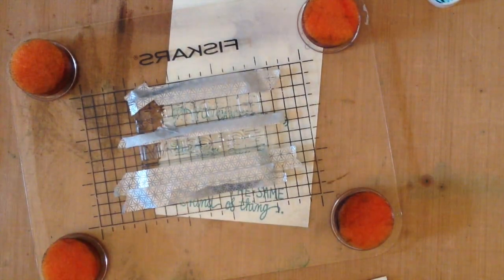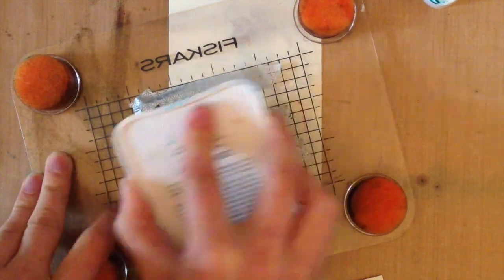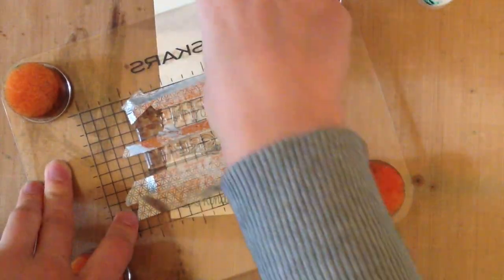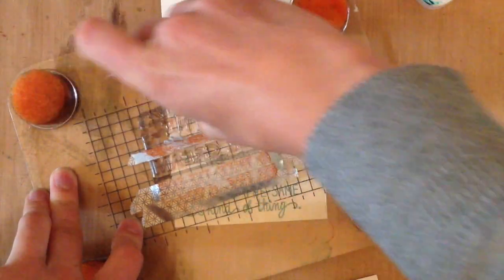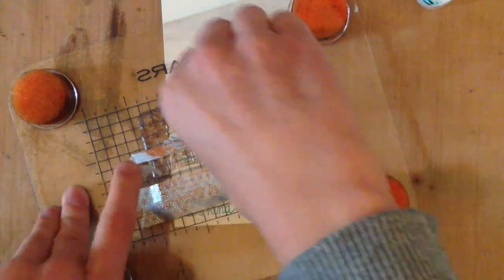I really wanted the two words that were in a different font to be in a different color, so I inked those up using sorbet ink from Close to My Heart. This is sort of an orangey reddish color, orangey pink. Then I removed the washi tape and was able to stamp.